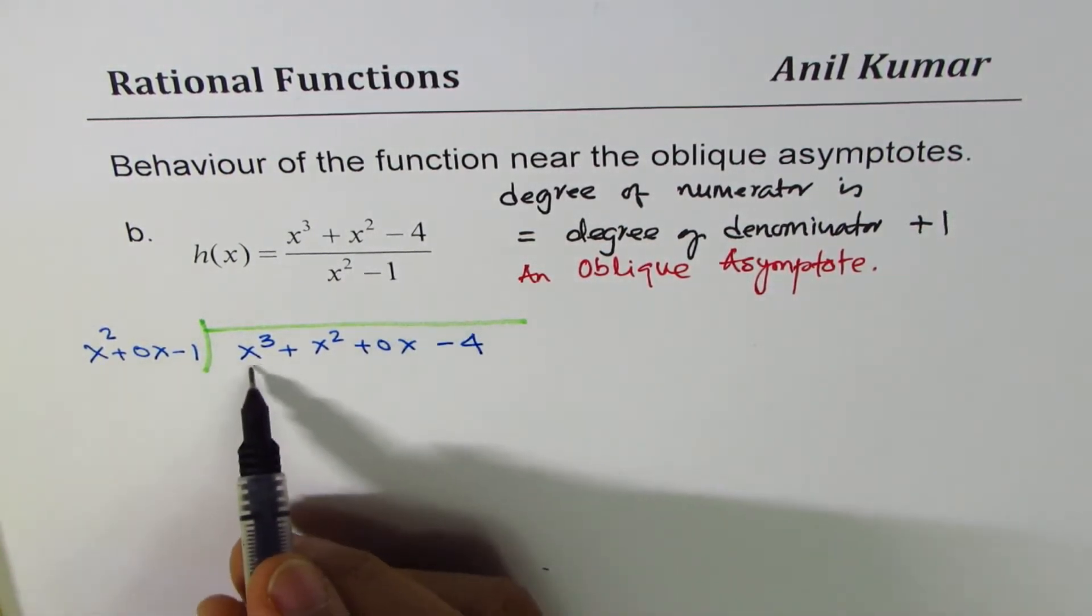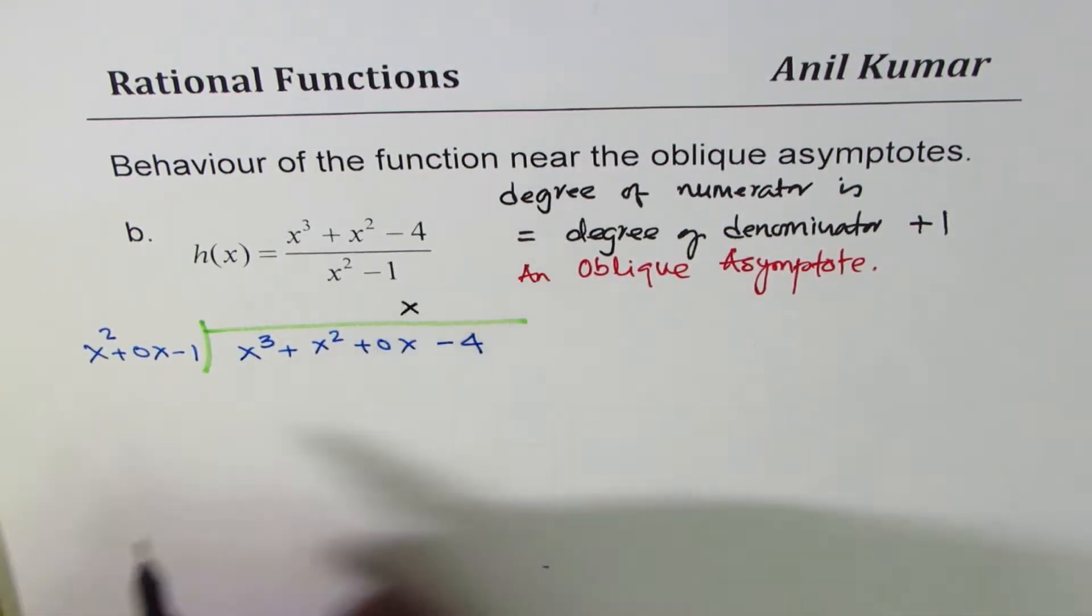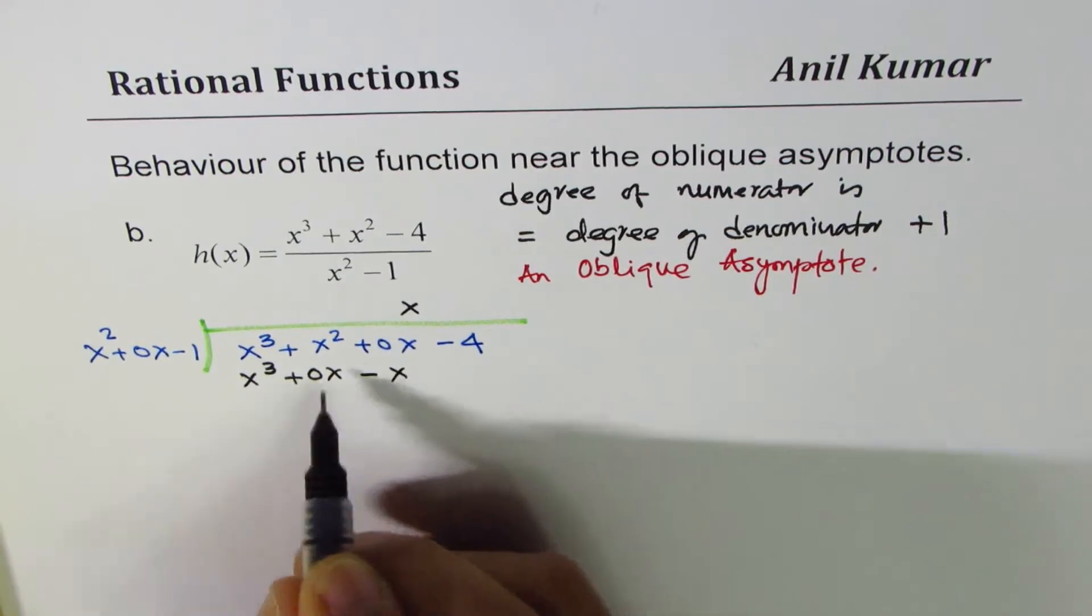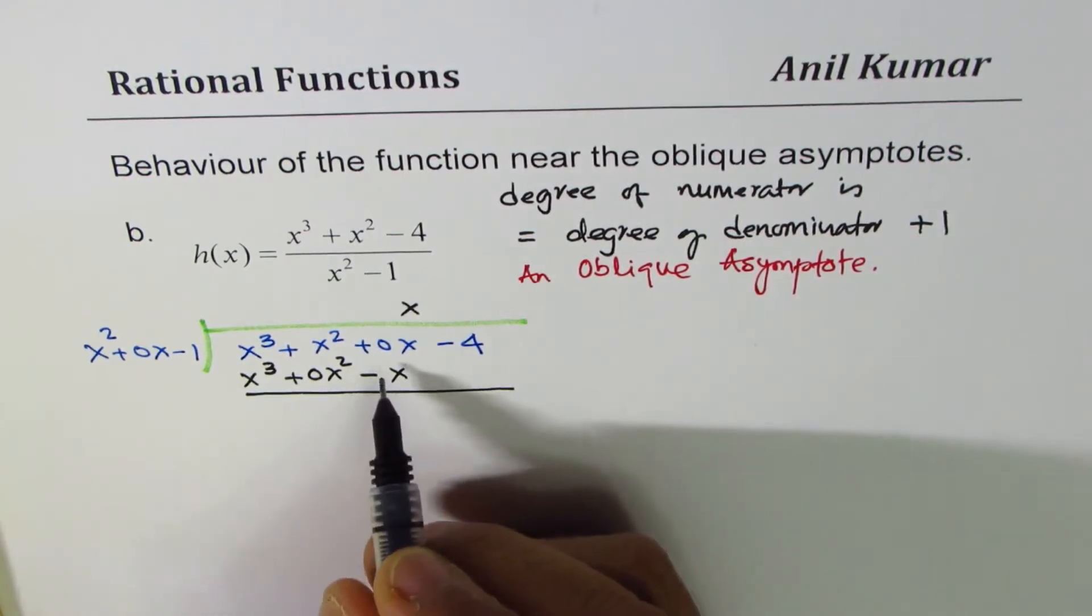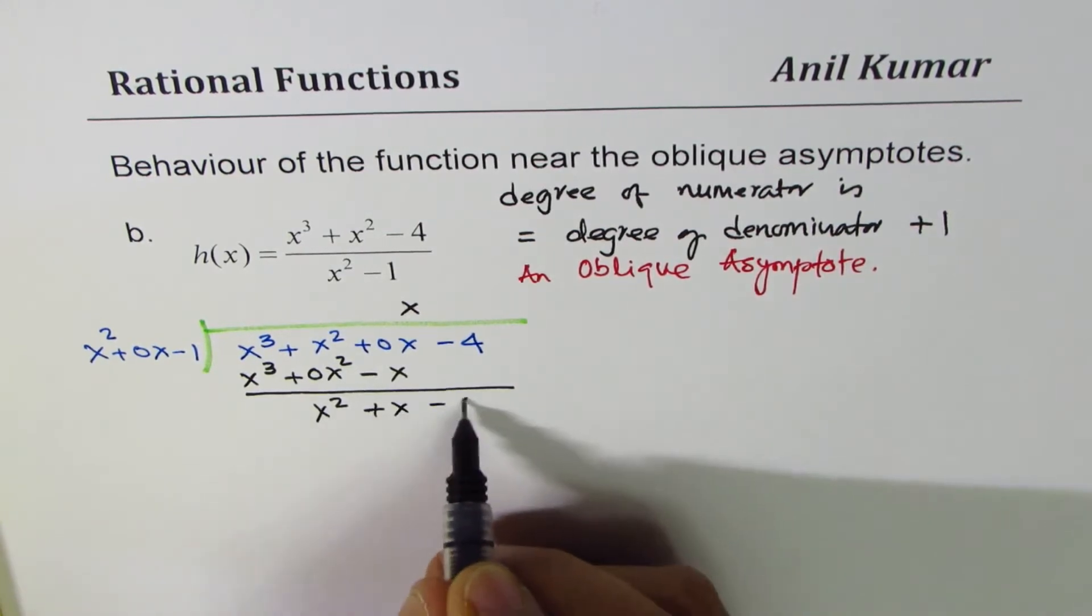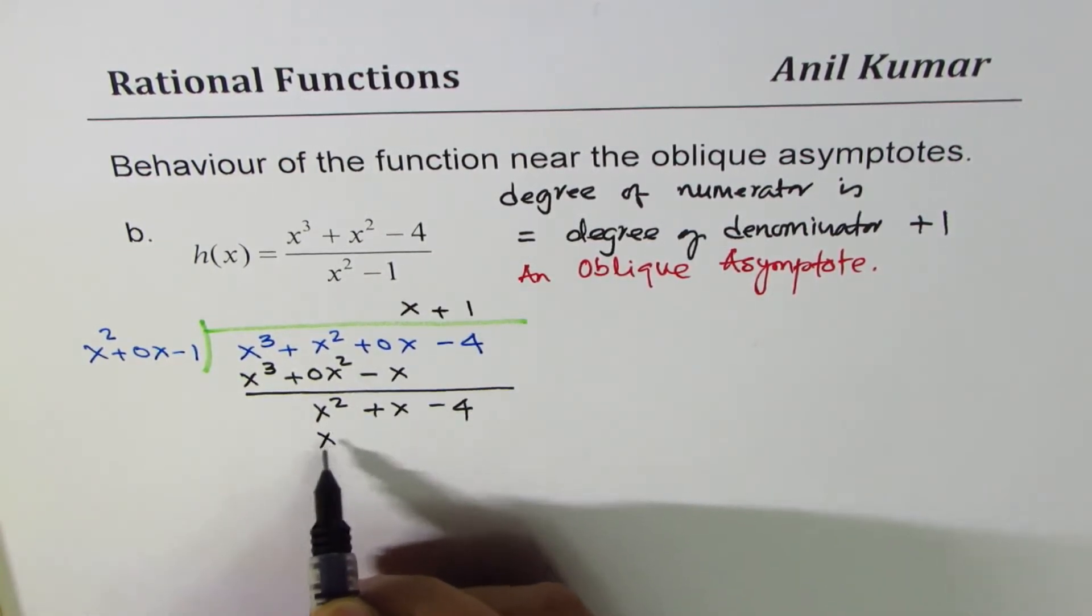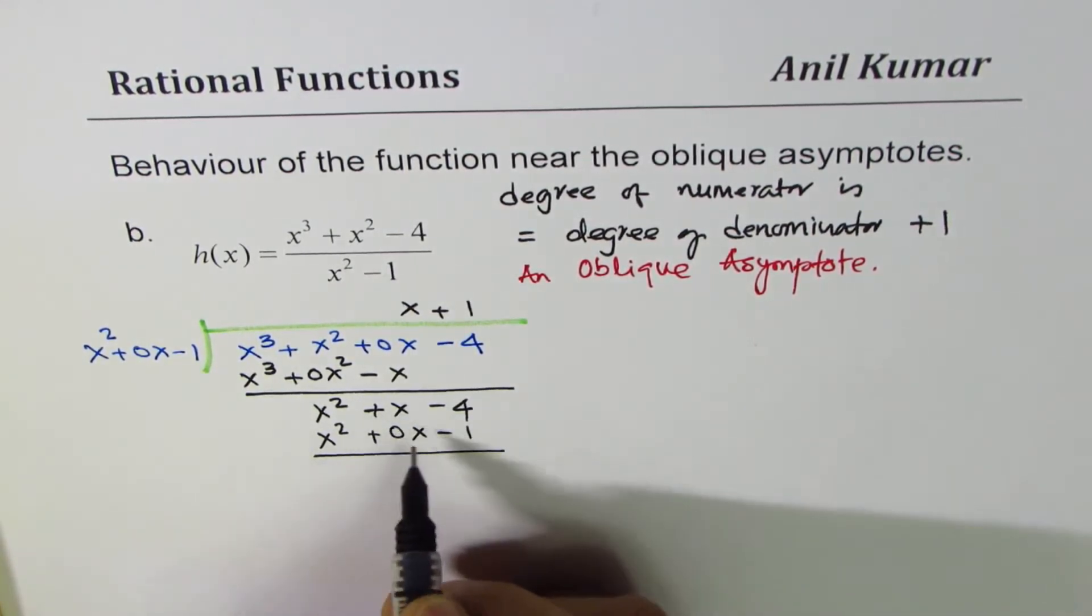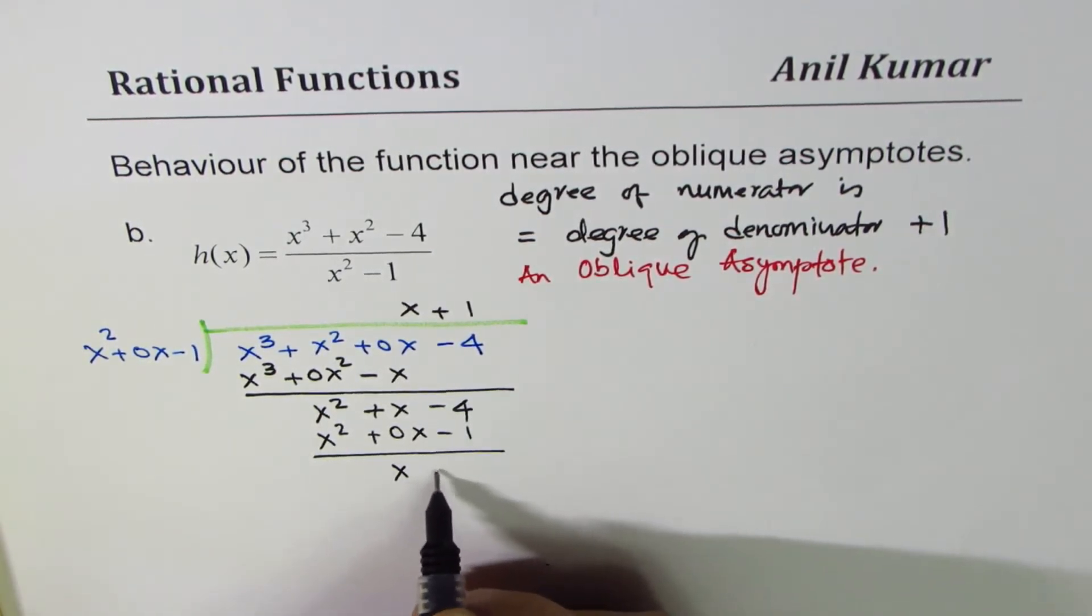We have to take care of the first term, which is x cubed, multiplying by x. There are three terms in divisor. We will take three terms. So we put x here. We get x cubed plus 0x squared minus x. Now you get x squared here. You get plus x minus 4. It could go one time, so we will say plus 1. We get x squared plus 0x minus 1. When you take away, you get x minus 3.